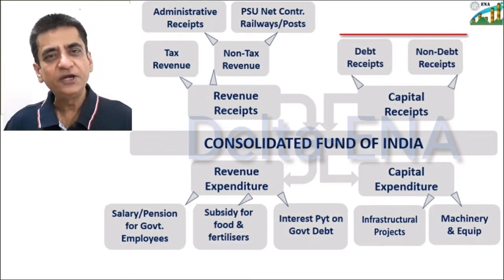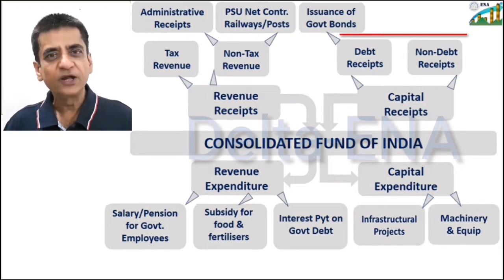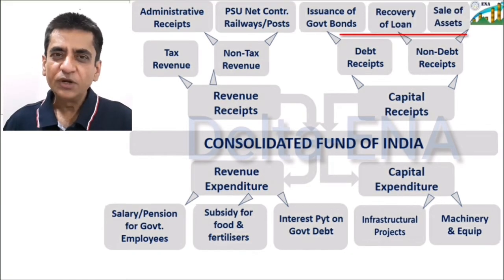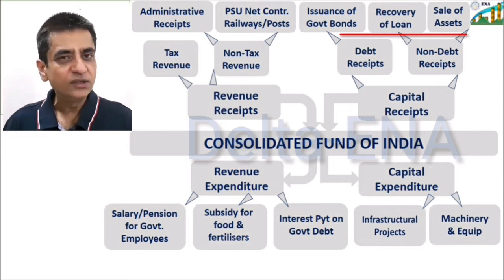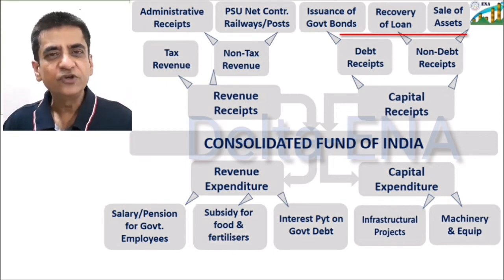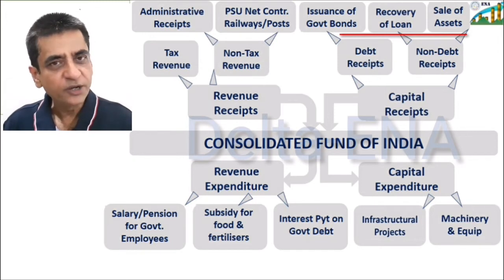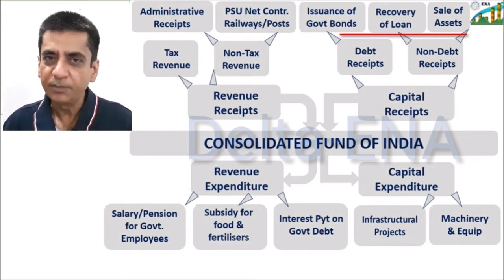Capital receipts are again divided into debt receipts and non-debt receipts. Debt receipts are receipts by the government on account of loans taken by issuing government bonds in the market. Non-debt receipts come by way of recovery of loans given by the government to other governments, and also various receipts on account of the sale of government assets like disinvestment receipts. All these are non-debt receipts accounted under capital receipts.